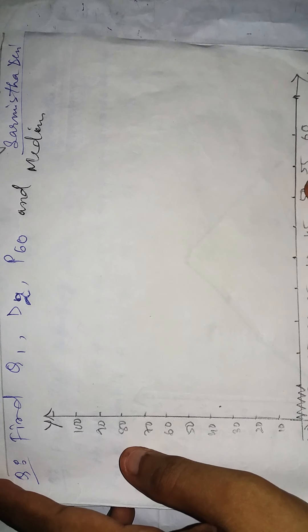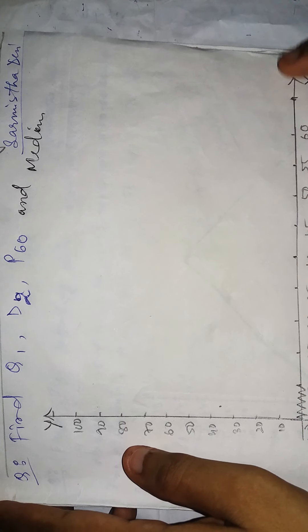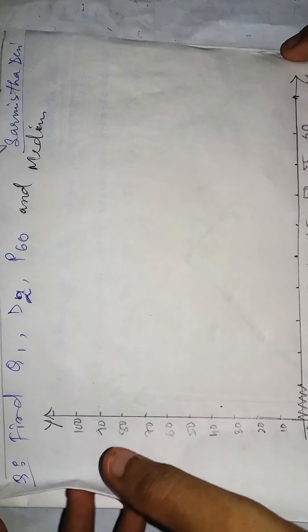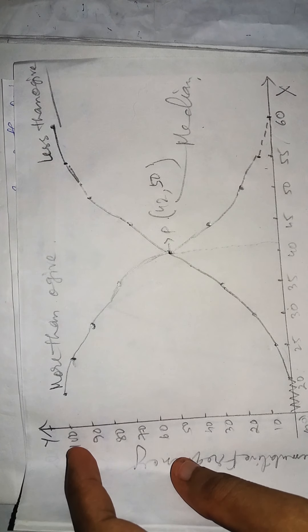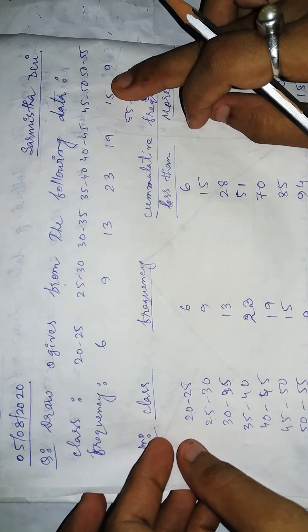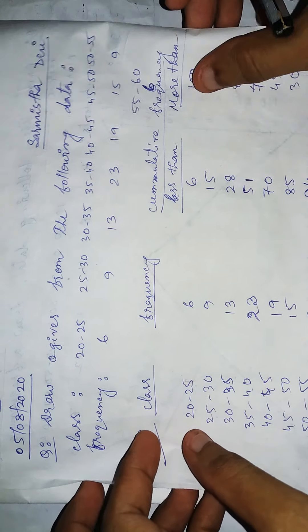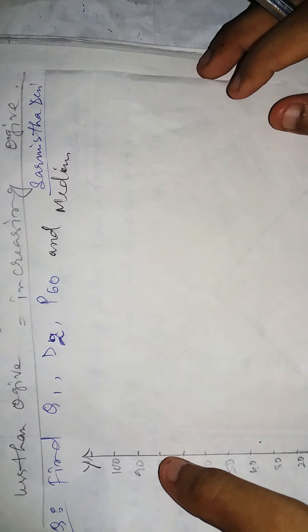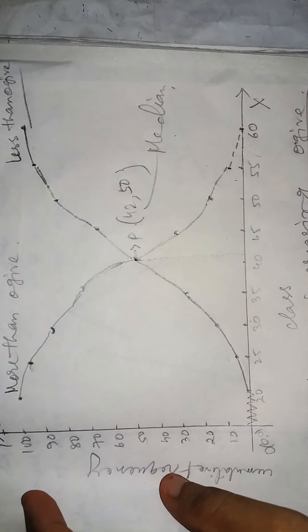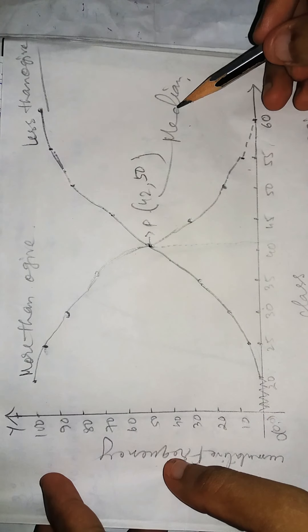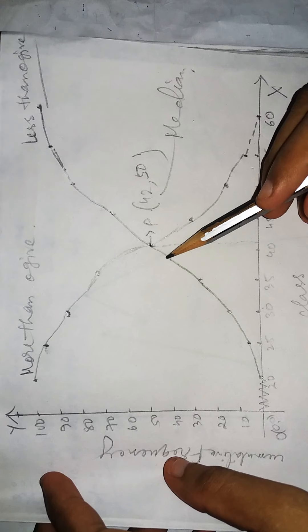First of all, for the same question from the last class where we discussed how to calculate median with the help of two ogives, this question asks us to calculate Q1, D2, P60, and median. In the last class, we have seen that we can calculate median with the help of more than and less than ogives.